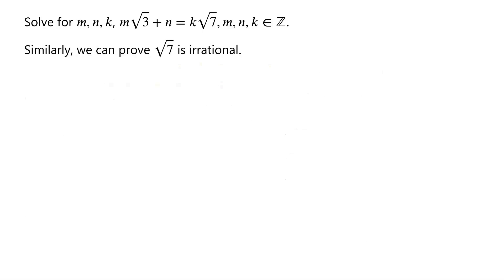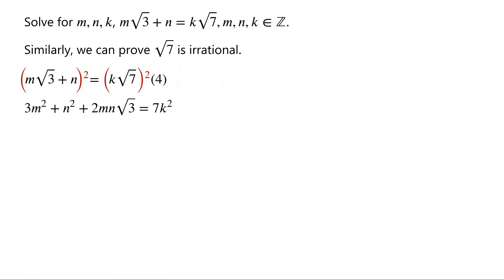Next, we look at the equation m√3 + n = k√7. Squaring both sides, we have 3m² + n² + 2mn√3 = 7k². Rearranging the equation, we have 2mn√3 = 7k² − 3m² − n².